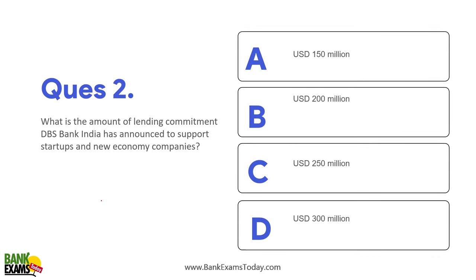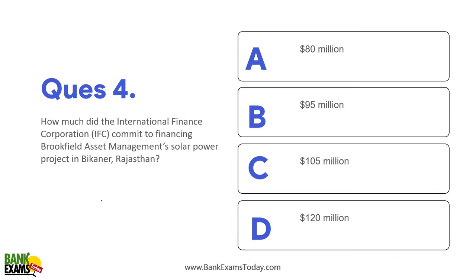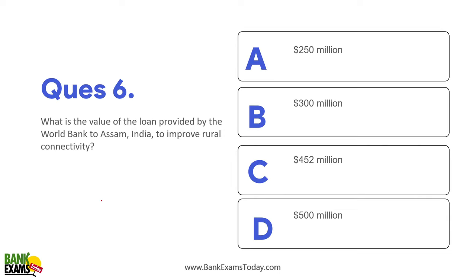What is the amount of the lending commitment between DBS Bank to support startups in India? — 250 million dollars. For what purpose did NTPC sign a loan agreement with Japan Bank for International Cooperation? — For FGD projects and renewable energy projects. How much did IFC commit to financing Brookfield Asset Management's solar power plant in Bikaner, Rajasthan? — 105 million dollars. What is the value of the loan provided by World Bank to Assam to improve rural connectivity? — 452 million dollars.